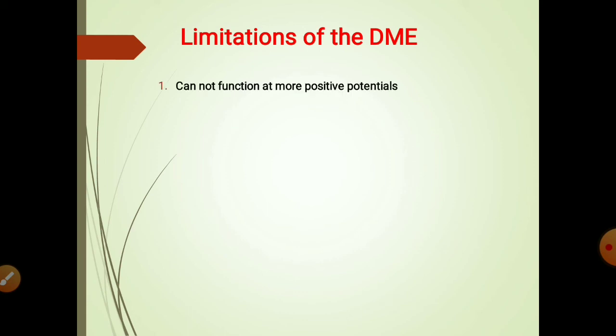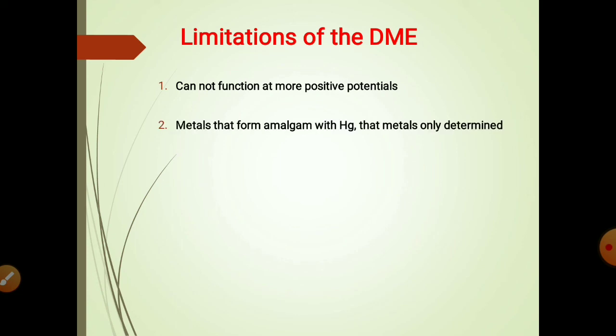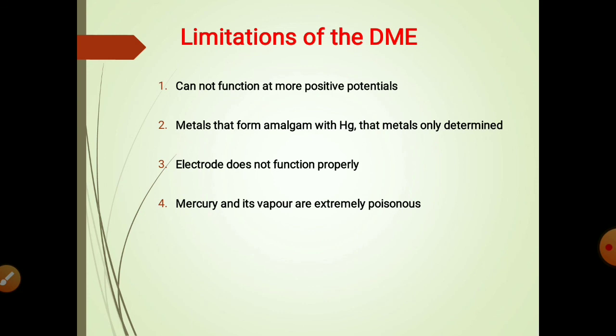Now let us see some limitations of a DME. DME cannot function at more positive potentials, that is greater than plus 0.4V. Only those metals that form amalgams with mercury can be determined — this is one of the limitations. In the presence of strong oxidizing agents, the electrode does not function properly. Mercury and mercury vapors are extremely poisonous.